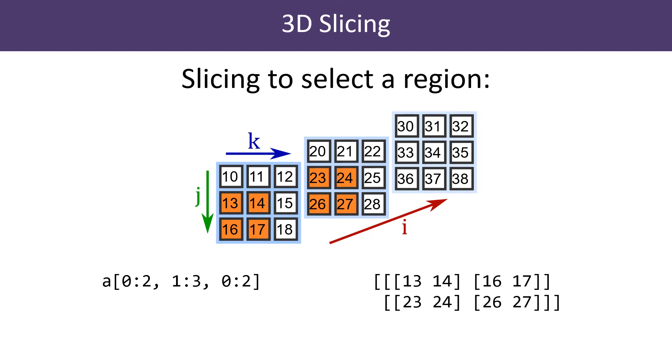The second has a slice [1:3], which selects the second and third rows. The third dimension has a slice [0:2], which selects the first and second columns. The resulting slice is a 2x2x2 array containing the values that match those slices.